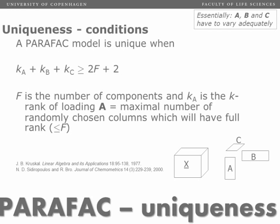Having the K-rank, the rule for uniqueness can be stated as: the K-rank of component A plus component B plus component C—if that sum is larger than two times the number of components plus two, the model will be unique. This condition is not a necessary condition, but it is a sufficient condition. So if this is fulfilled, the model will be unique.